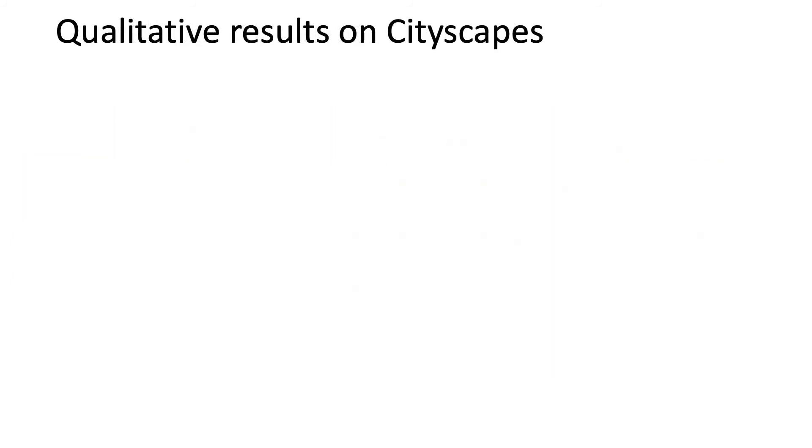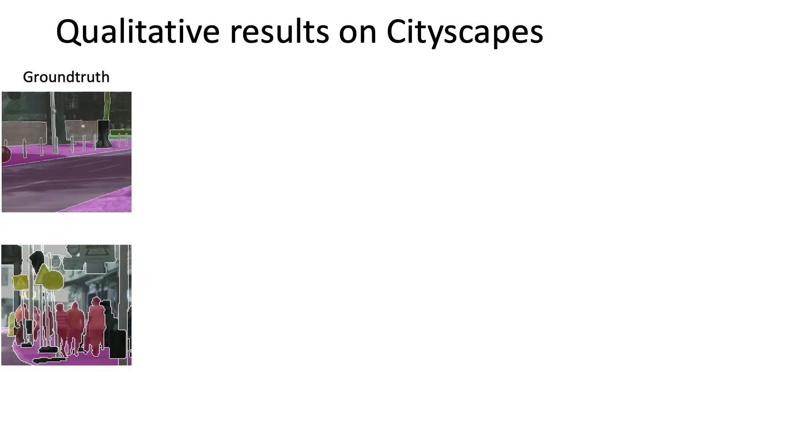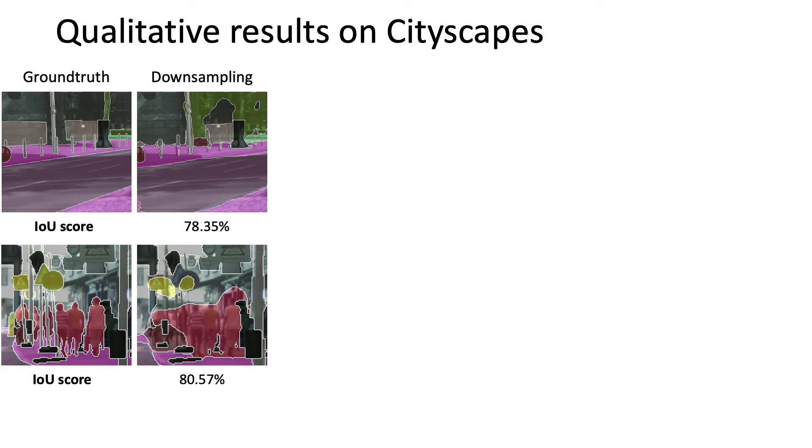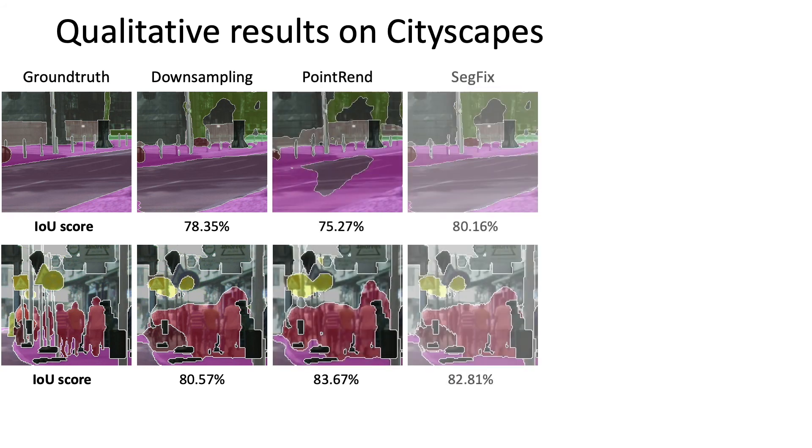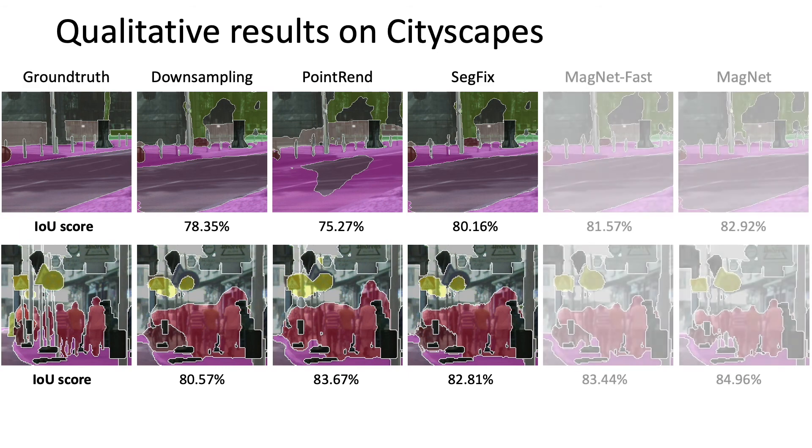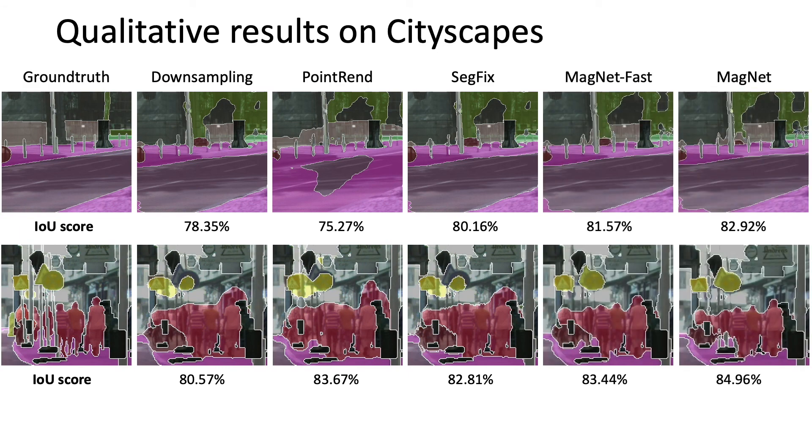In this example, the downsampling produces a coarse prediction when all small objects like poles are missing. All previous methods can improve the segmentation result, but they are not perfect. Our Magnet and Magnet Fast can edit boundaries and recognize new tiny objects at the same time.